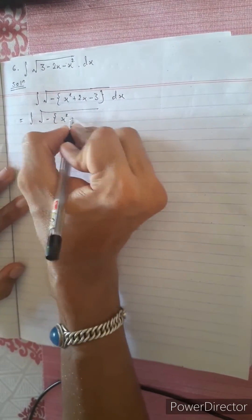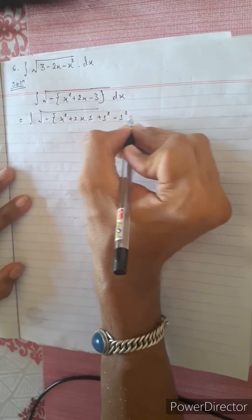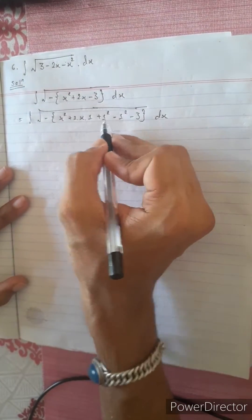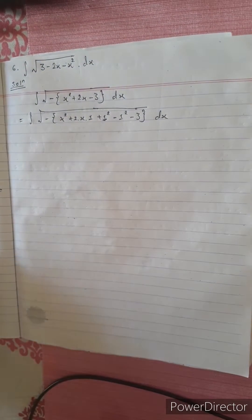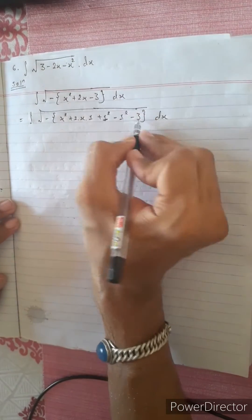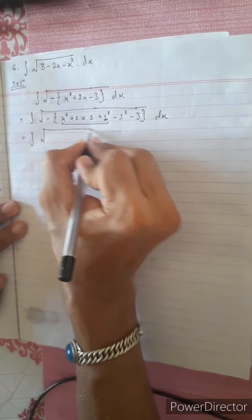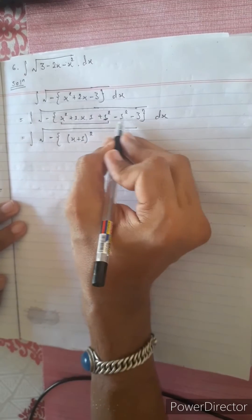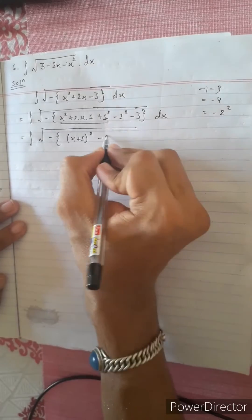Let's see: a² plus 2ab plus b² minus 1² minus 3. I can tell you this 1² is equal to 1² minus 1², plus one minus one minus one minus two, which is the ending of x plus one minus two.